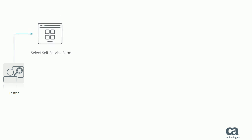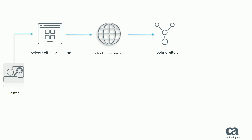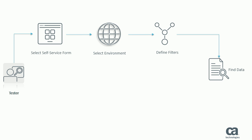This diagram helps you understand the overall flow and tasks that a tester performs to find and reserve the test data. The first step in this process is to select the form from the self-service catalog interface. In the second step, specify the required environment where the data is available. Then, define the filter criteria that is used to find the relevant data. After specifying the filter criteria, you find the data.